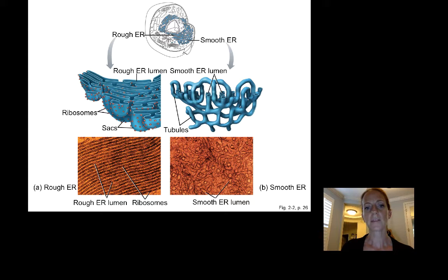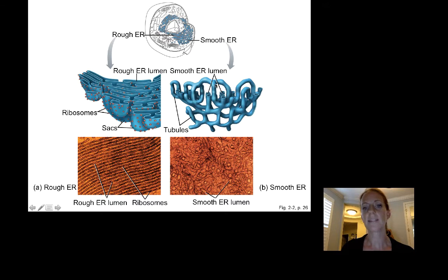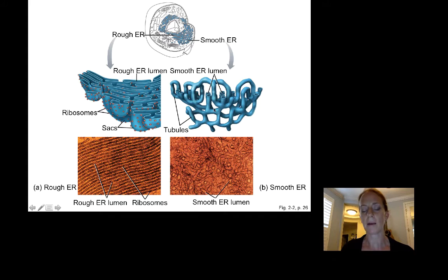Here are pictures of rough versus smooth ER. Rough ER is on the left, showing ribosomes on it. Smooth ER is on the right with no ribosomes. Both are long membrane-bound networks within which molecules can be synthesized and transported.